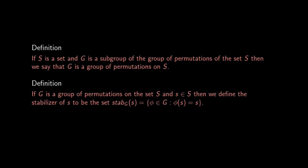Let us define the stabilizer of an element s in the set S. The stabilizer of an element s is the set of all those permutations in the group G such that φ(s) = s itself, that is, such that φ fixes s.